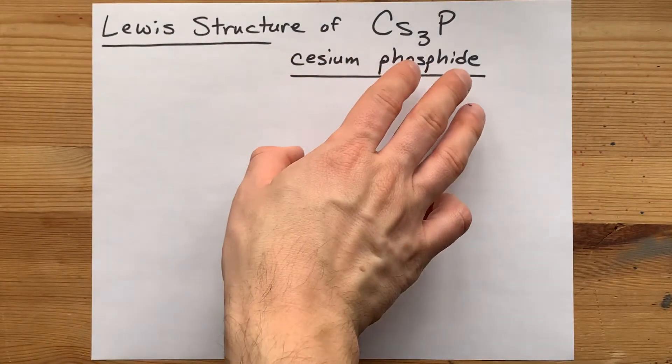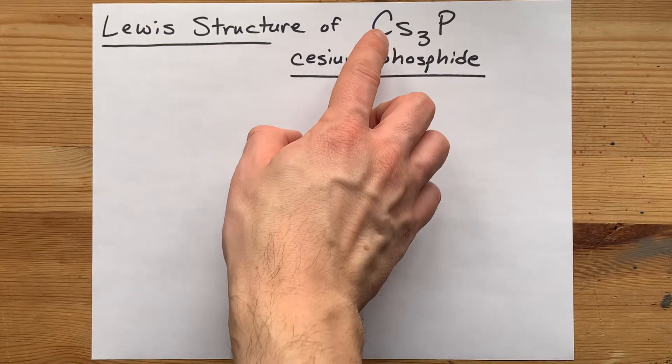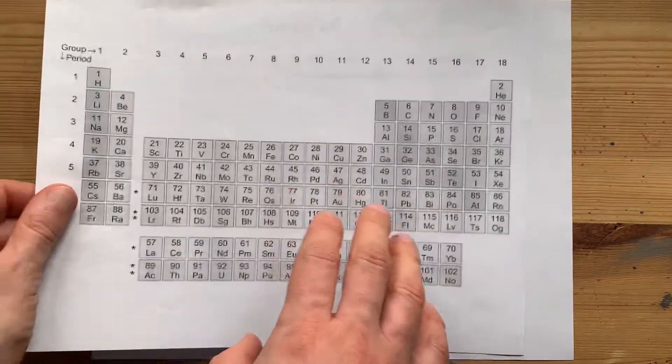Lewis structure of cesium phosphide, cesium bonding with phosphorus.